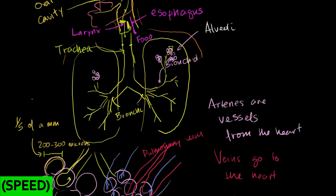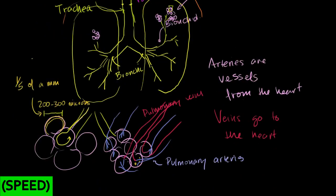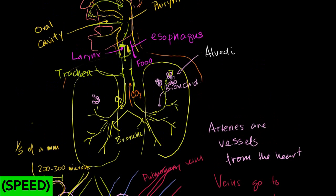So oxygen comes in through the mouth or nose, through the pharynx, through the larynx, into the trachea, through the bronchi, into bronchioles, ending up in the alveoli, and being absorbed into what were arteries. The blood gets oxygenated — hemoglobin becomes very red or scarlet once it has the oxygen — and goes back as pulmonary veins. At the same time, the deoxygenated blood also releases carbon dioxide into the alveoli. When we exhale, we breathe out CO2. The air going back out can also vibrate the vocal cords, allowing us to talk.